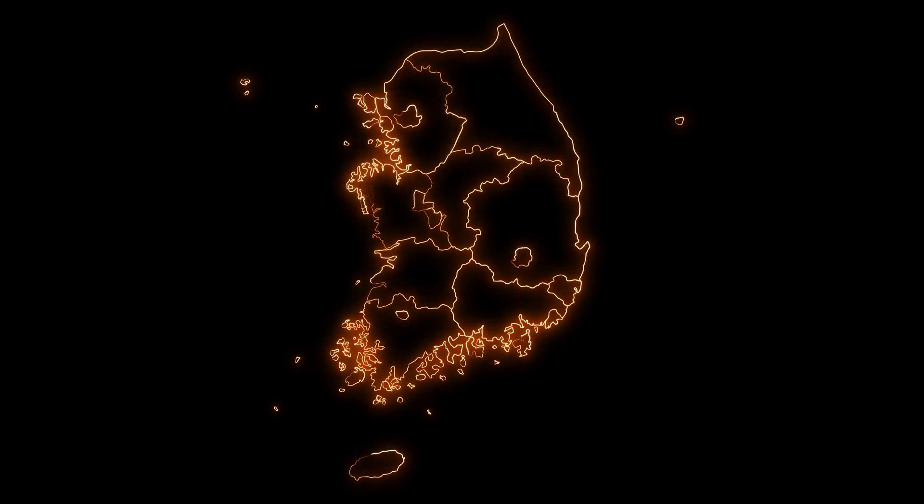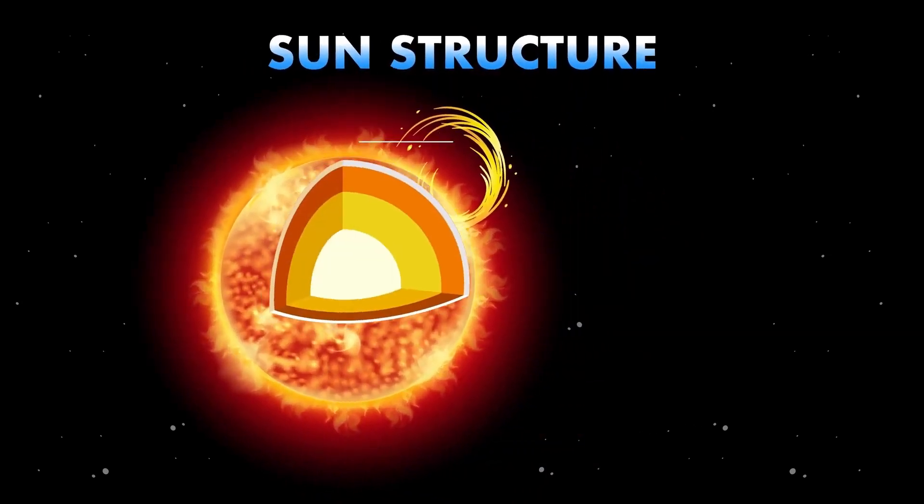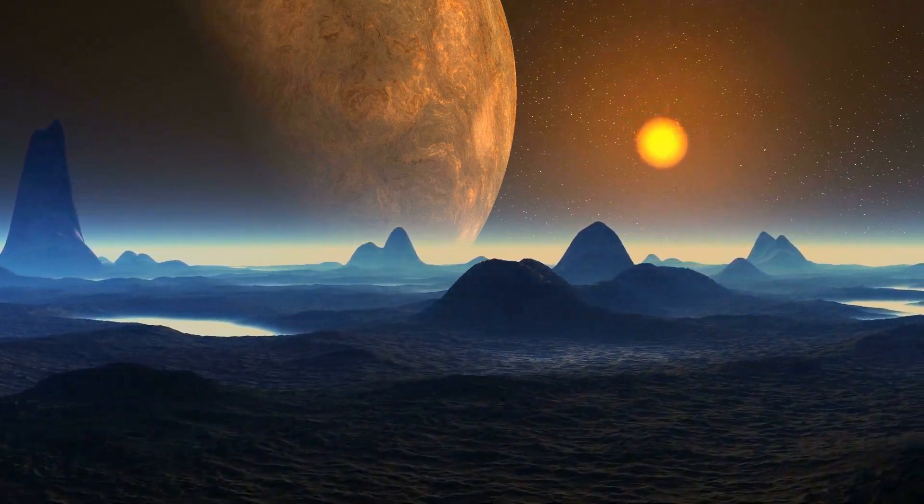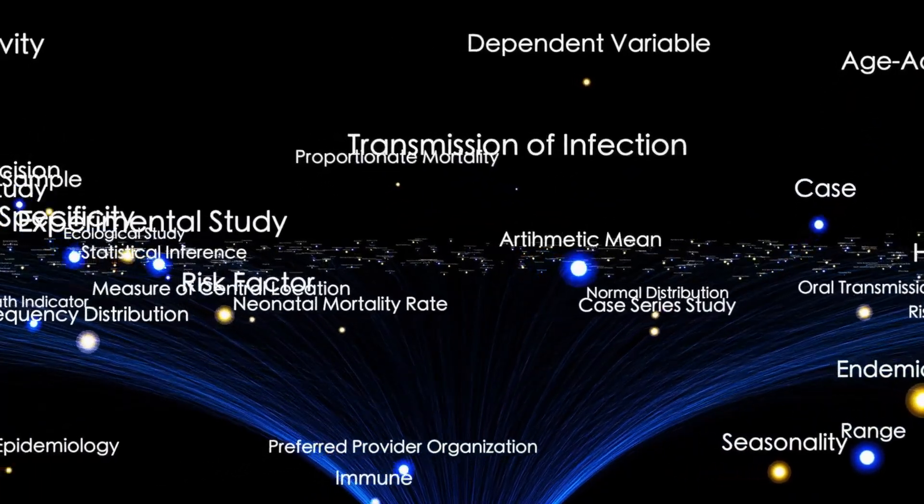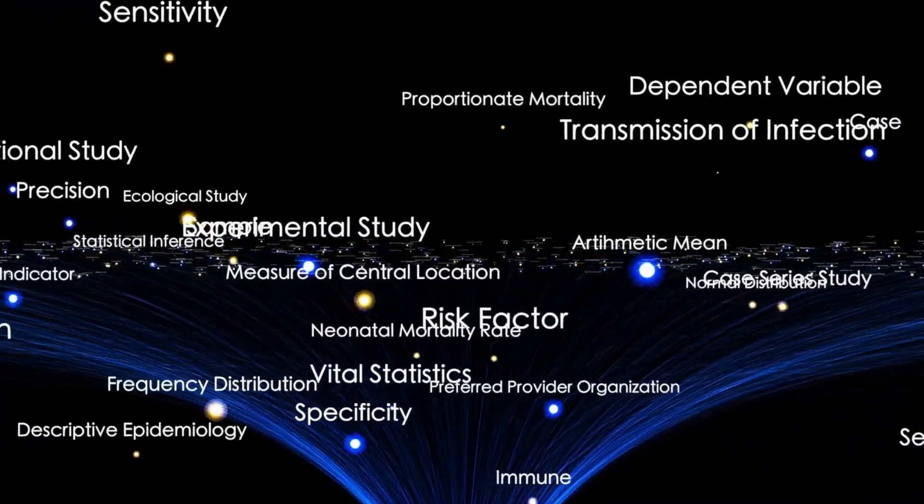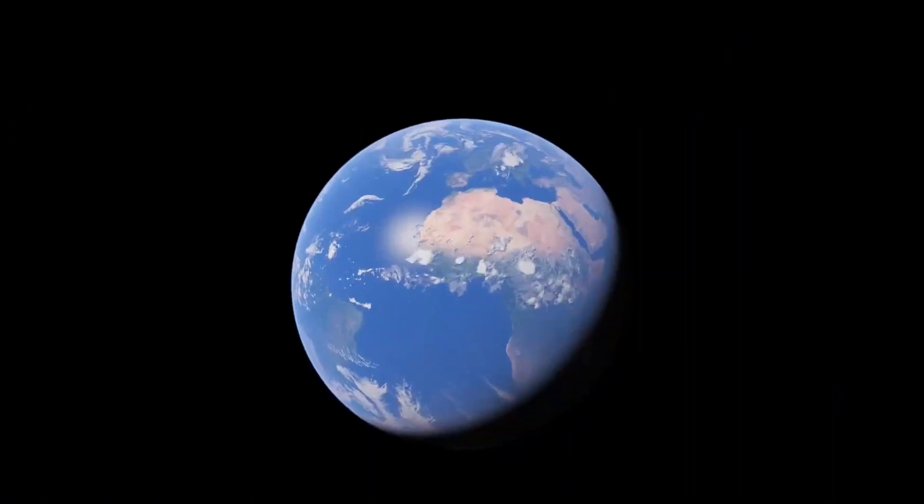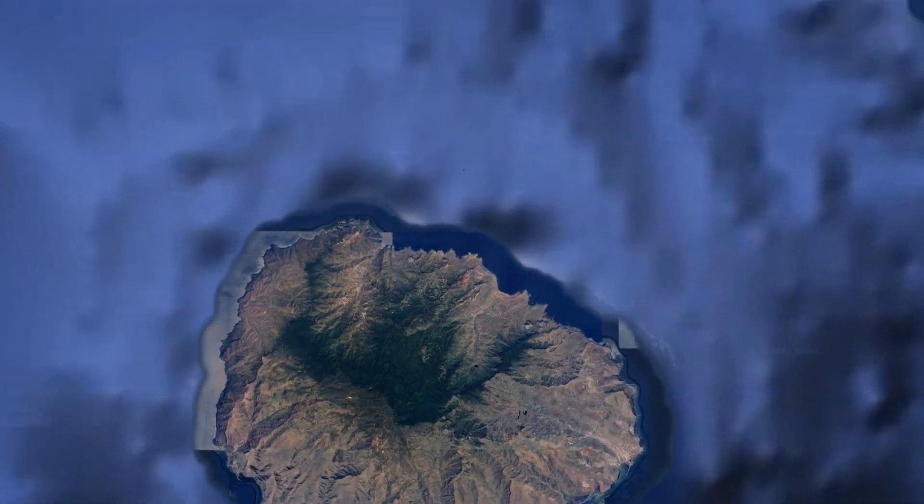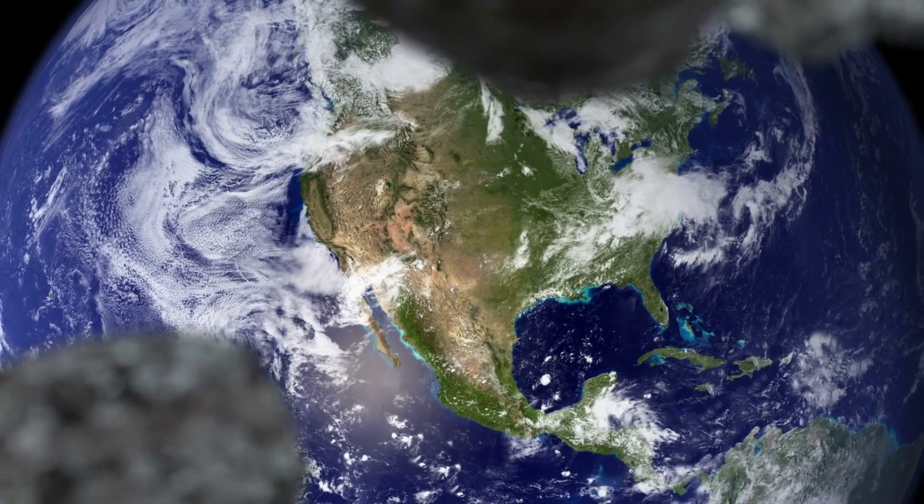The mission to uncover the secrets of Proxima B, despite its challenges, remains a driving force in the realm of space exploration. Among the tools fueling this invaluable research, the James Webb Space Telescope stands out. Launched toward the end of 2021 after numerous delays, this cutting-edge telescope holds the promise of shedding light on one of the most tantalizing questions in cosmology: does life exist on Proxima B?